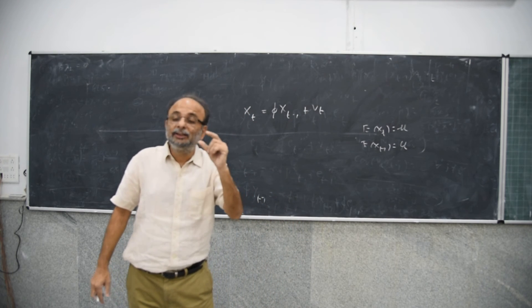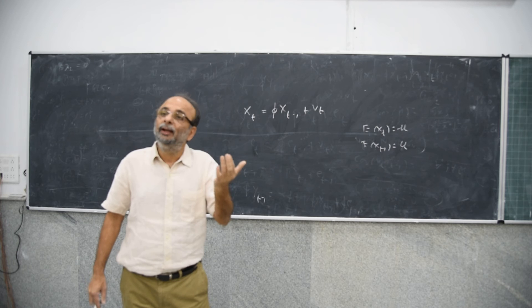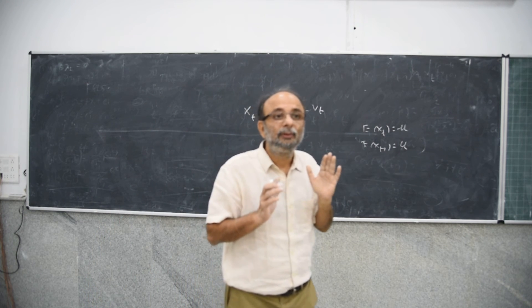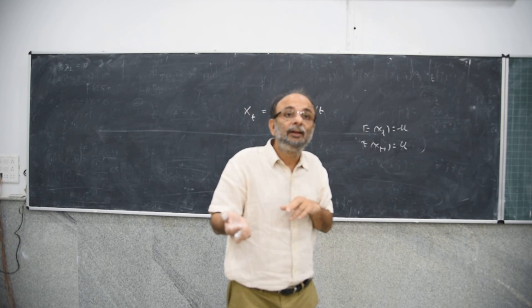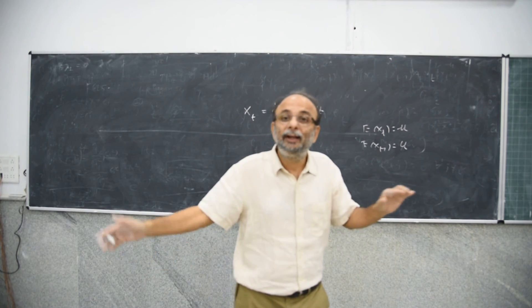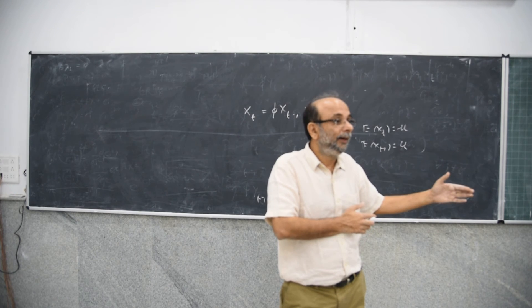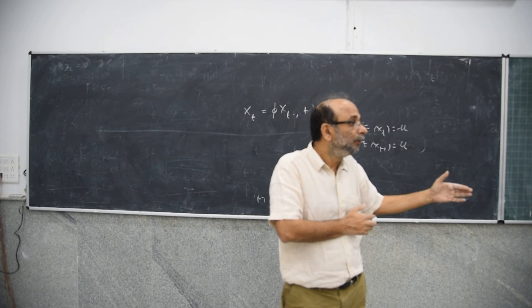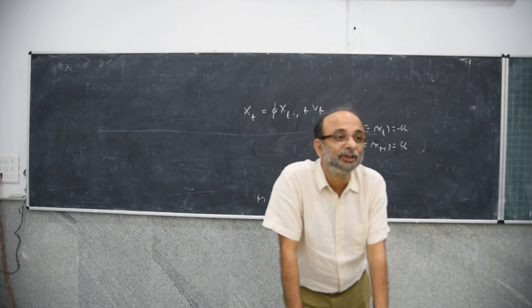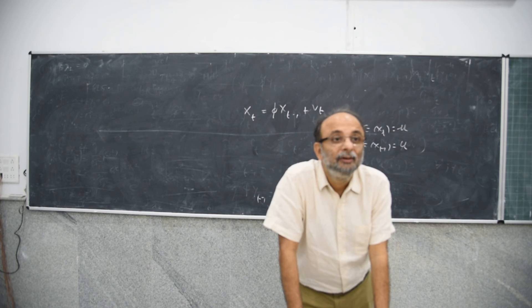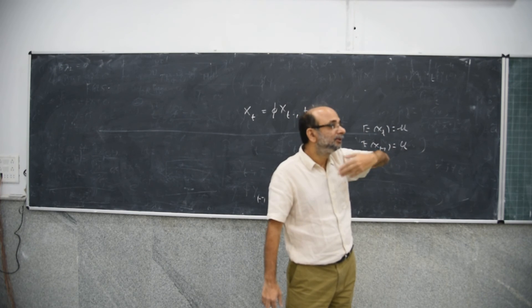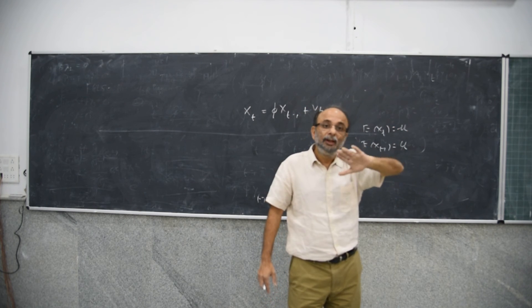Remember, Xt is a random variable — Xt could have taken different values, and expectation of Xt is the mean of those values. Xt minus 1 is also a random variable, because Xt minus 1 is the value of Xt in the last period. That could have taken any value from a probability distribution. So expectation of Xt minus 1 is the mean of that. We are assuming that these means are constant, so expectation Xt is mu, expectation Xt minus 1 is mu, expectation Xt minus 2 is mu, and so on.